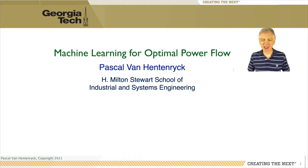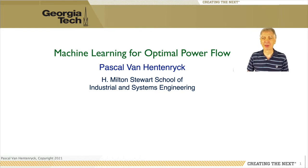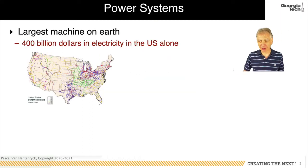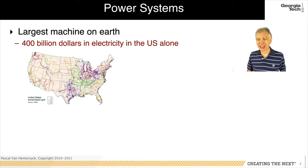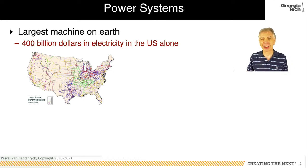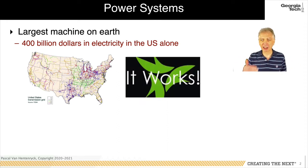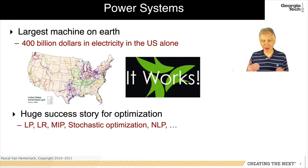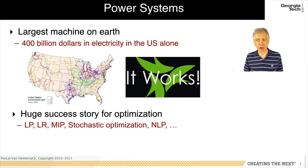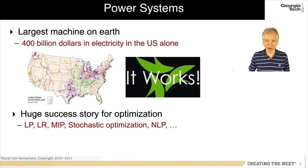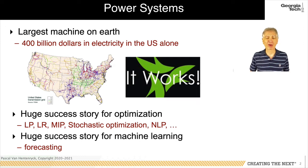Hello everyone and welcome to this tutorial on machine learning for optimal power flow. This is an area that has generated a lot of interest and excitement in the last couple of years, and my goal is to share some of this excitement with you. The electrical power system is the largest machine built by humankind. In the United States alone, every year the power system consumes, generates, and transmits about 400 billion dollars in electricity. It's a highly reliable system and a major success story for both optimization and machine learning, particularly for forecasting methods.